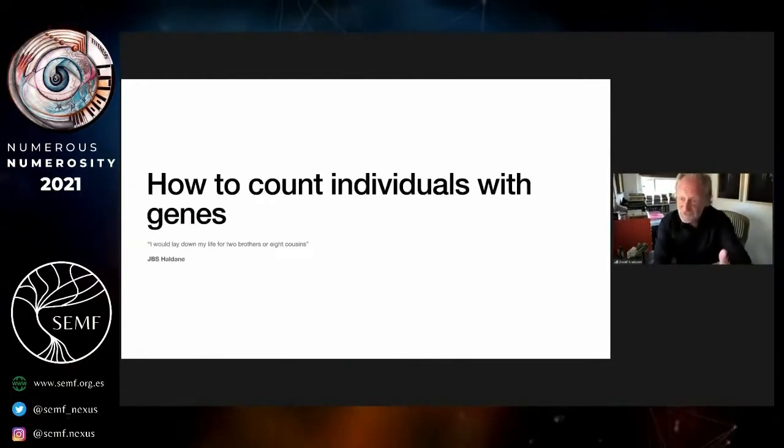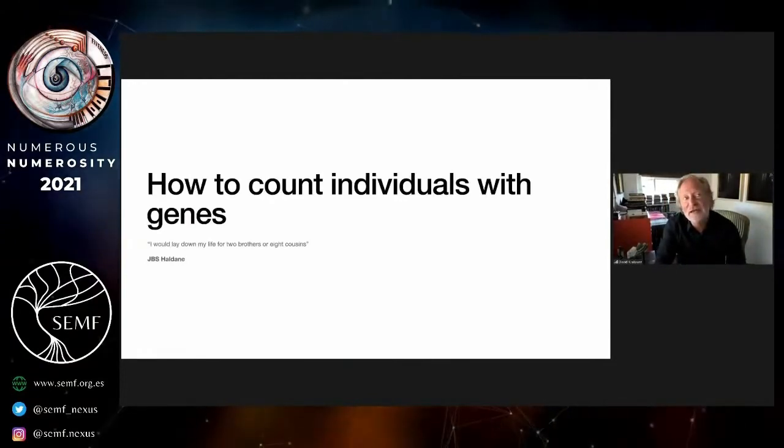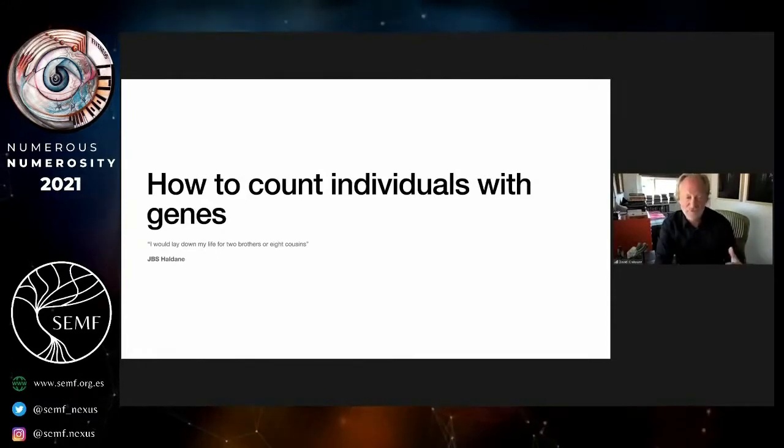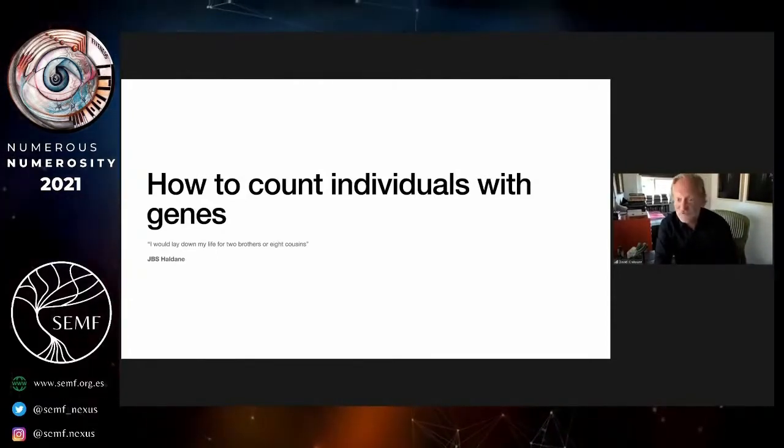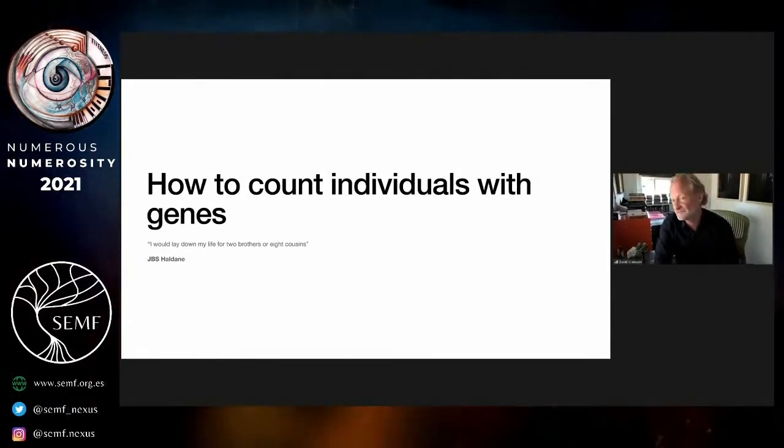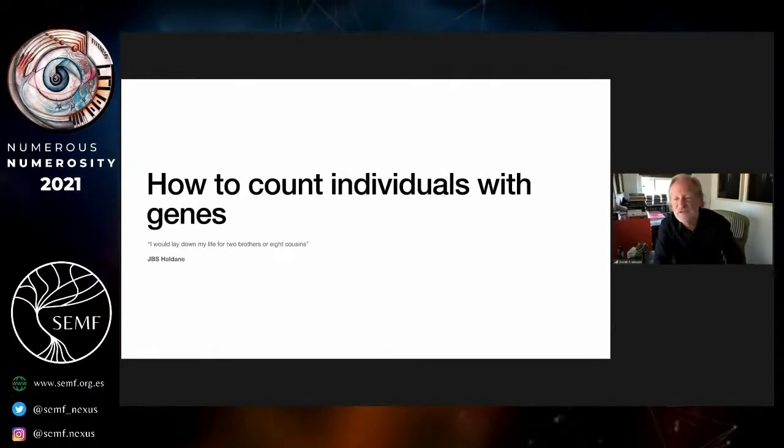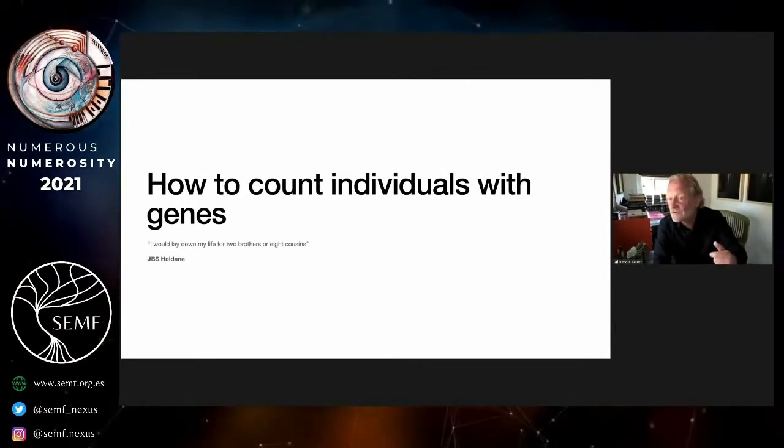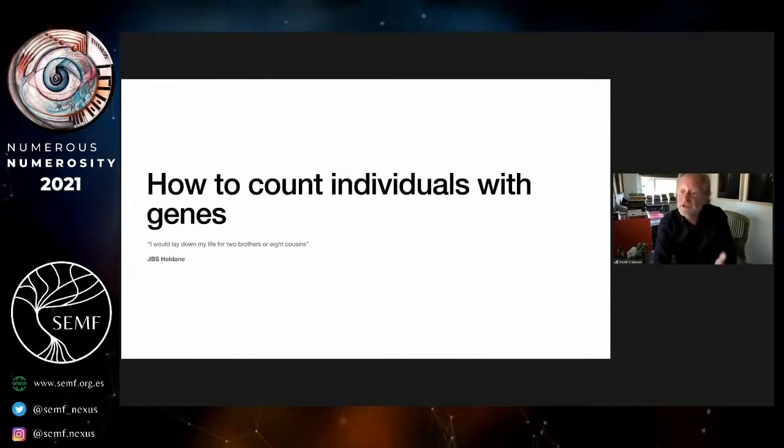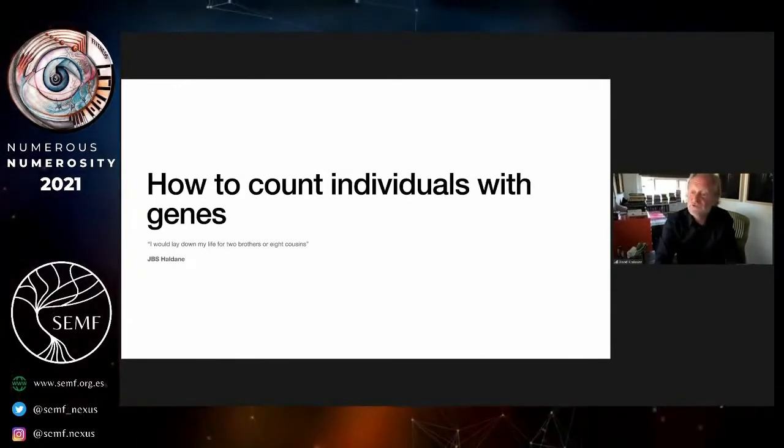Counting with genes matters because it's foundational for our understanding of pro-social and anti-social behavior. The basic premise is, as with the ants, if you're closely related you'll be nice, and if you're distantly related you'll be horrible.